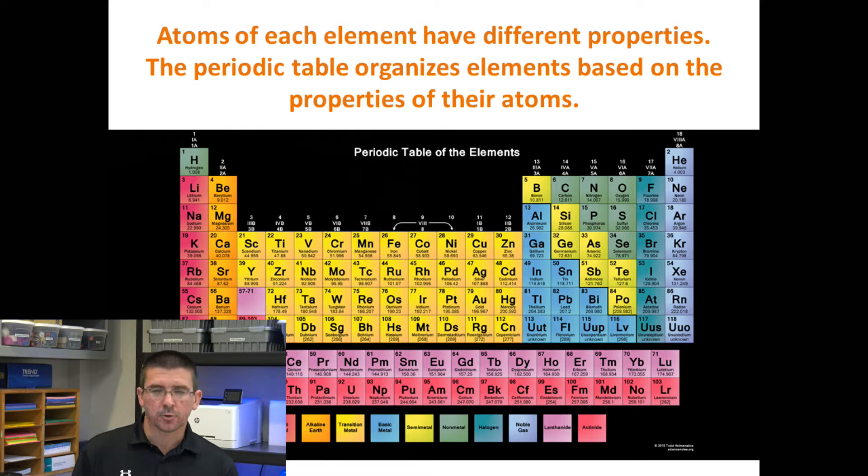It organizes them based on their properties. For instance, they're organized by noble gases, which are gases that don't react with other elements, transition metals, alkali metals, and several different groups. These different classifications tell us about the general properties of that type of element.